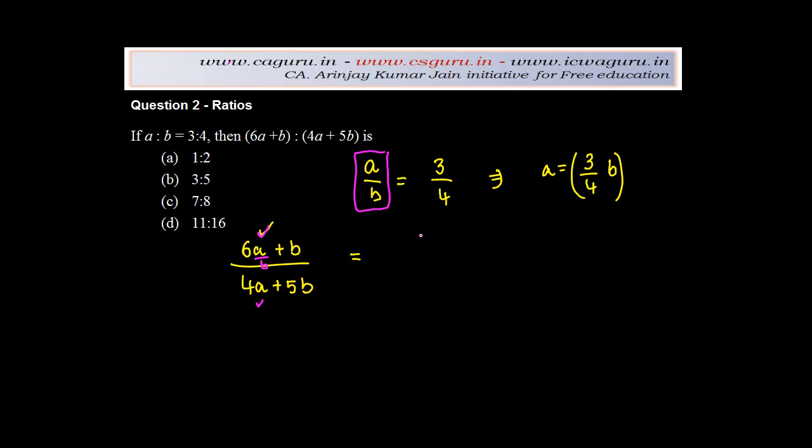So if I do that, what do I get? I get 6a plus b divided by b upon 4a plus 5b divided by b. Or in other words, if I just write this simply, I get 6a upon b plus b upon b.